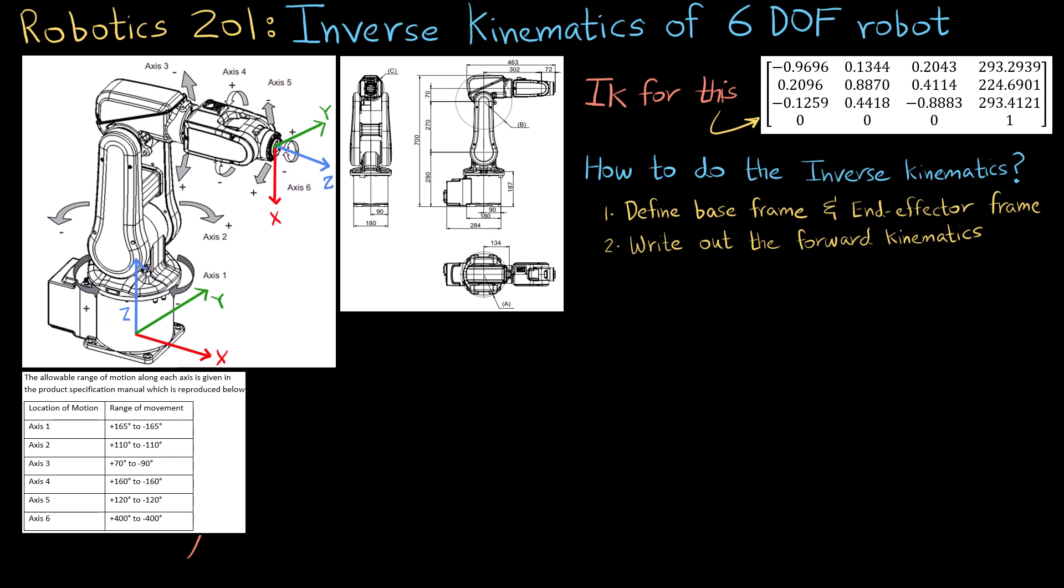So the first homogeneous transform is this. What this represents is I take this frame right here and I move it up to this point. So I can see that there is a displacement in z by 187 degrees, which corresponds to this. I take it up to this point and then I show a rotation about z axis by theta 1. So you see I am representing this rotation right here, which is about the z axis and I am calling it theta 1.